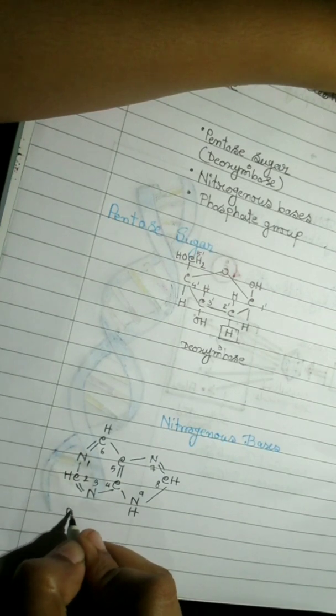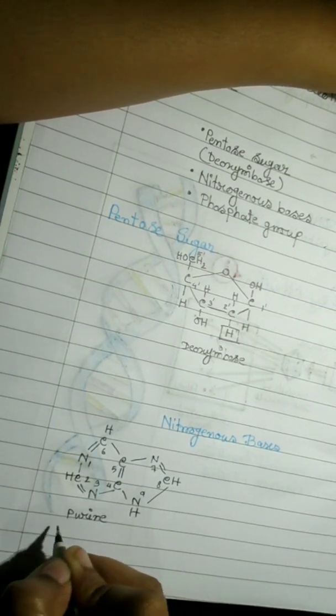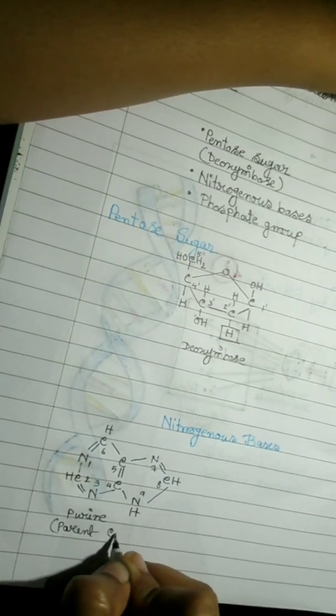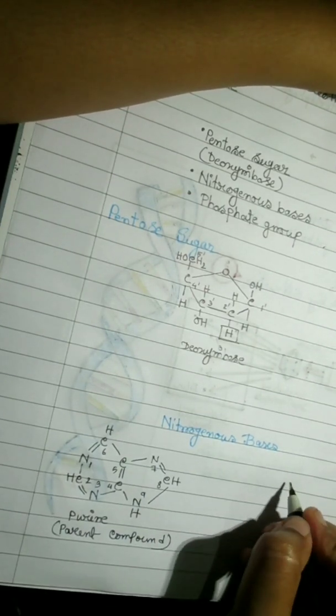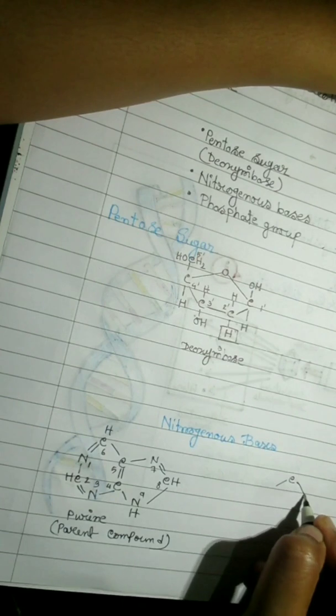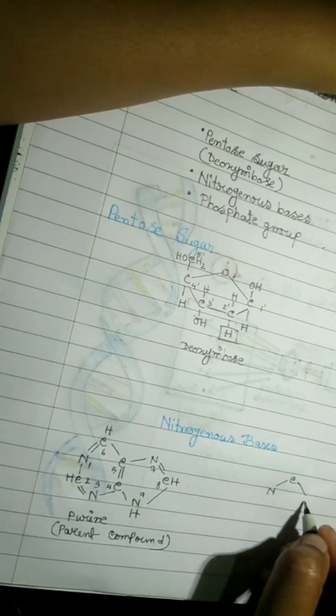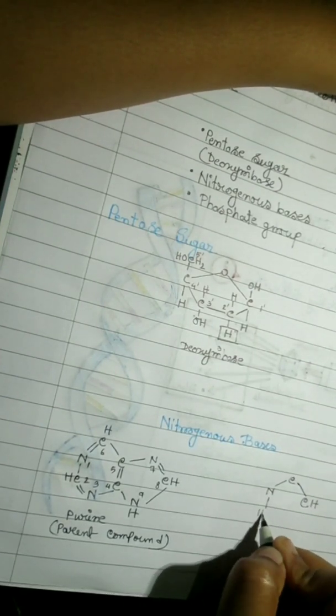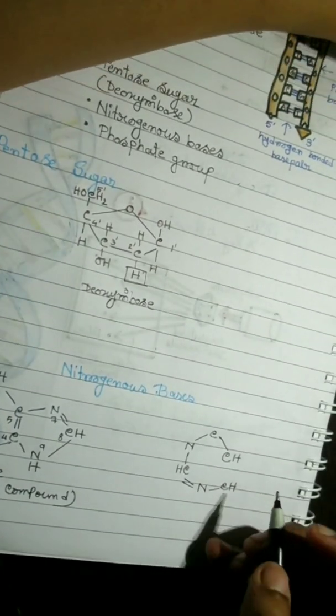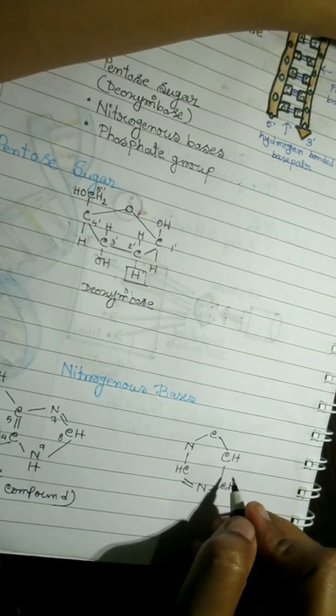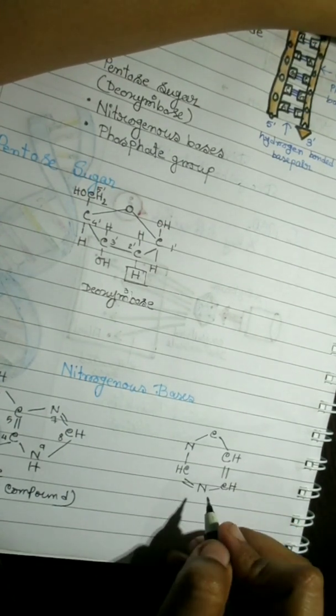Understanding these properties, we need to draw the figures. Bases are covalently attached to the 1 prime carbon of the pentose sugar. The purine bases are bound at the 9 numbered nitrogen and the pyrimidine bonds at the 1 numbered nitrogen.